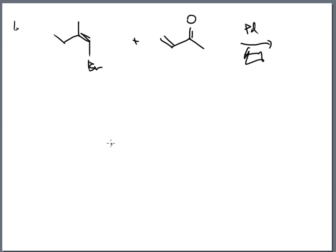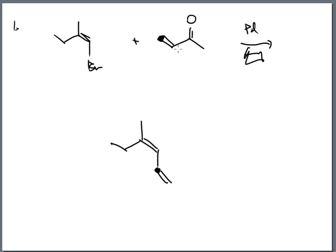Just like before, I'm going to take my starting material — there's my bromine. I'm going to take my eraser and remove it, then add on this carbon. That carbon has a double bond, which goes to another carbon with a double bond as well.